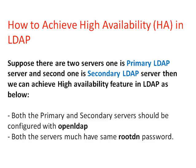In this video we will see how we can achieve high availability in LDAP. Basically, high availability means whenever the primary server goes down, the secondary server will come up and provide the service. This is called failover. In the failback scenario, whenever the secondary server goes down, the primary server will come back and provide the service. This is how the continuity of the service is maintained in high availability.